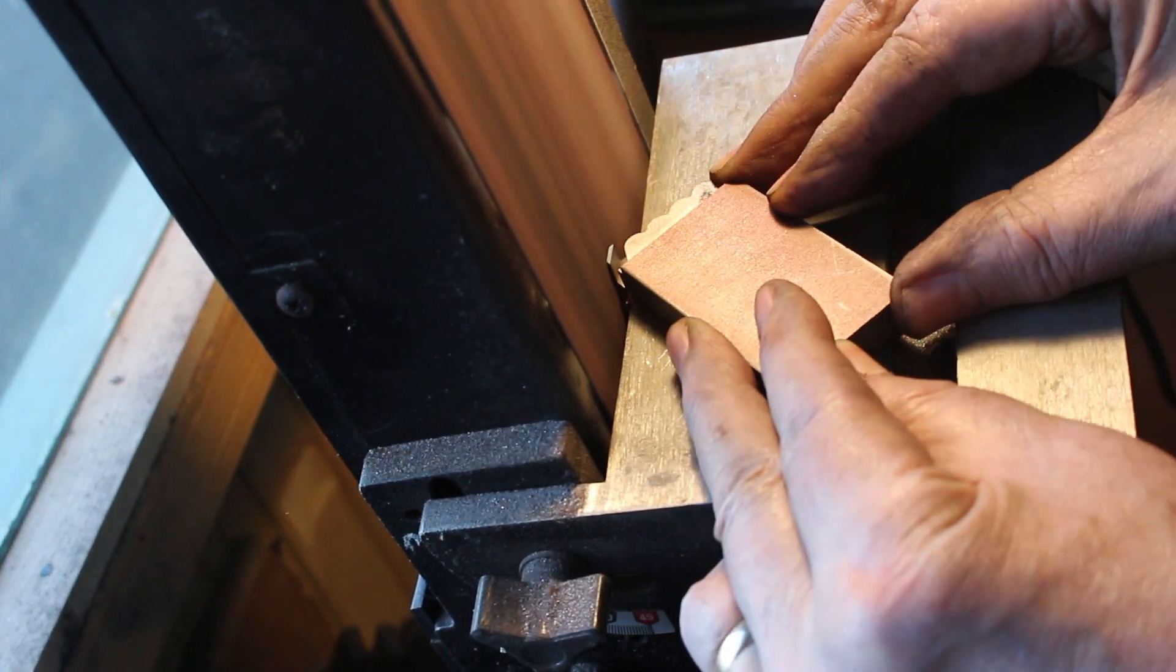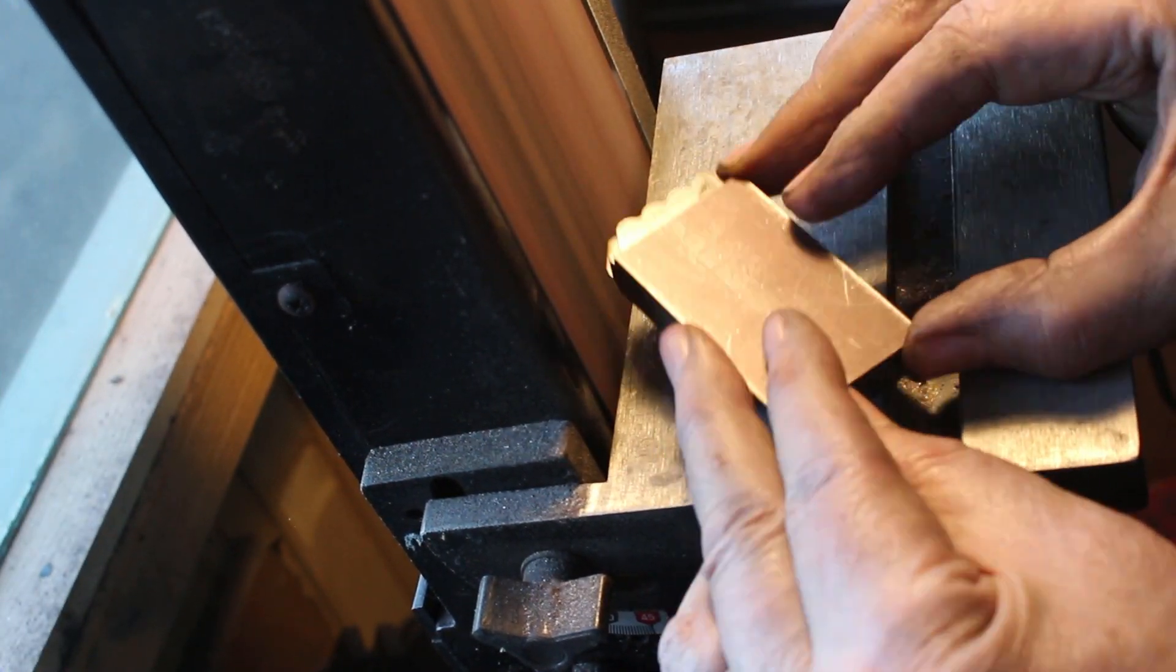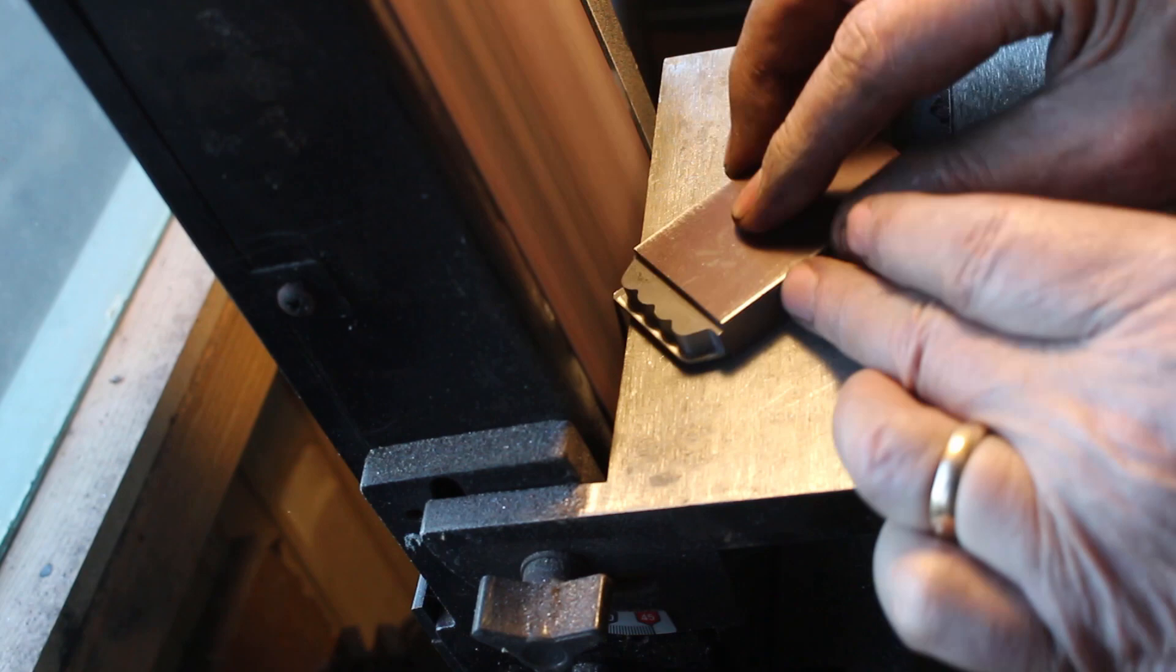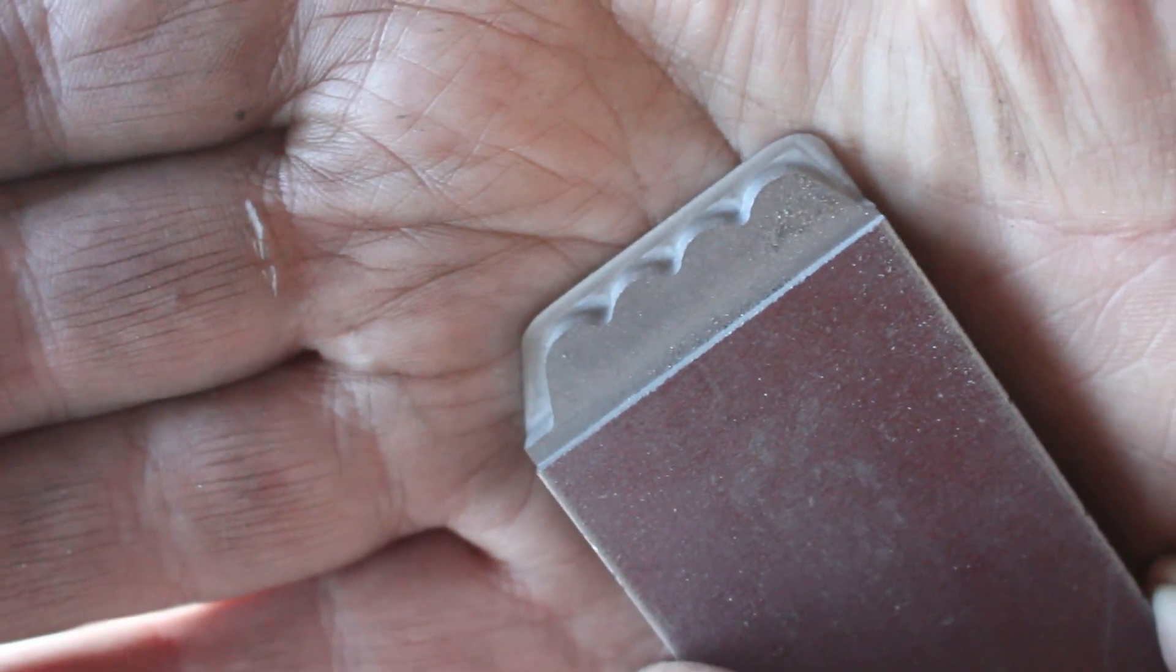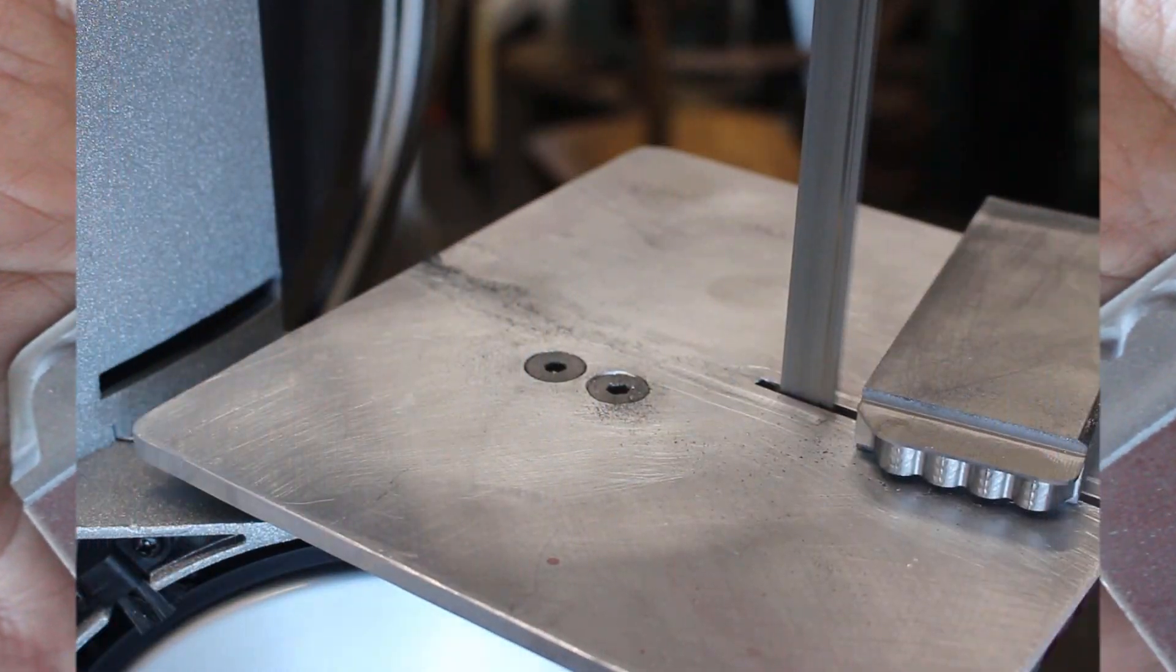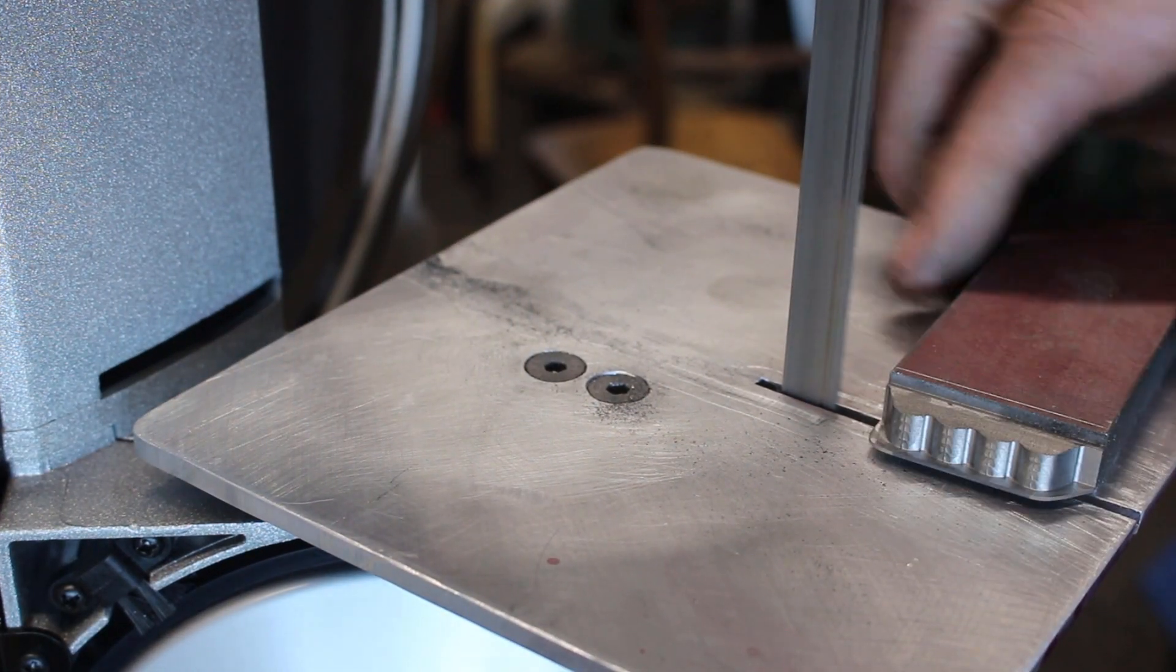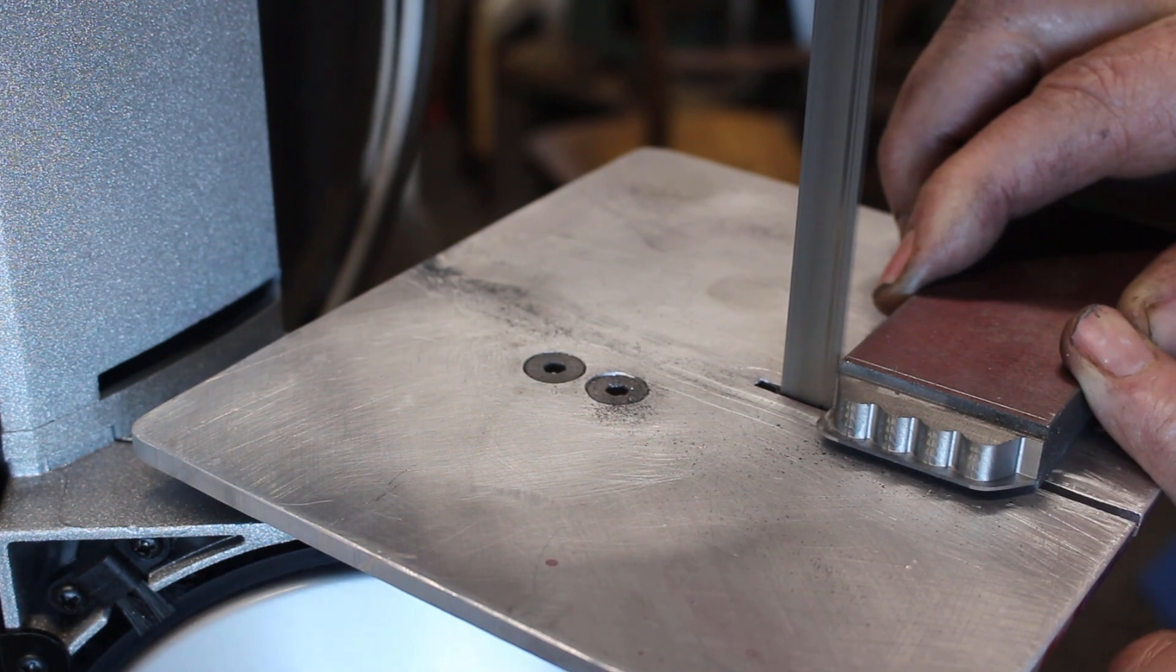Profiling the final shape of the flange portion on the linisher. Just doing this by eyeball, it's not critical, just making it look right. On to the bandsaw to cut off the first of the 12 spacers.